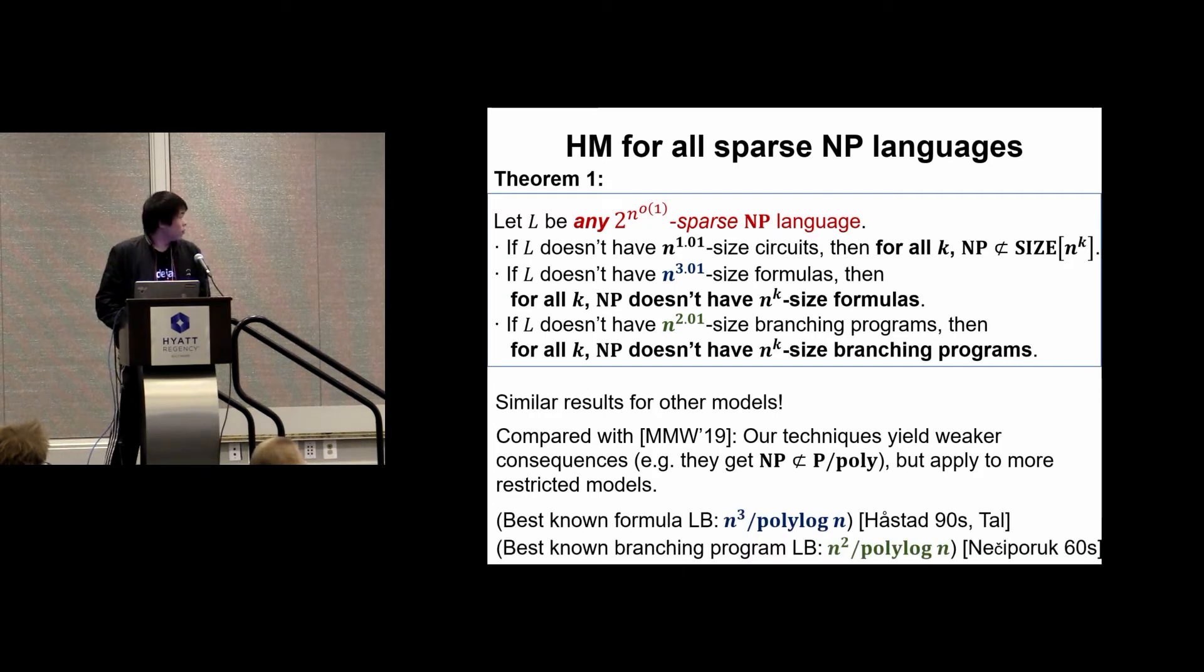We could compare the lower bounds required in our magnification theorems with the state-of-the-art NP lower bounds, and we could find that they nearly match up to an n^epsilon factor.